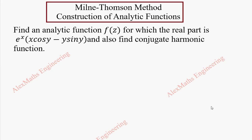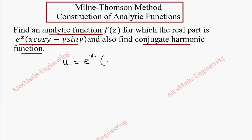Hi students, this is Alex here. In this problem we are given to find an analytic function f(z) in which the real part is given, and we should also find the conjugate harmonic function. Let's take the real part u which is e^x into (x·cos(y) minus y·sin(y)).